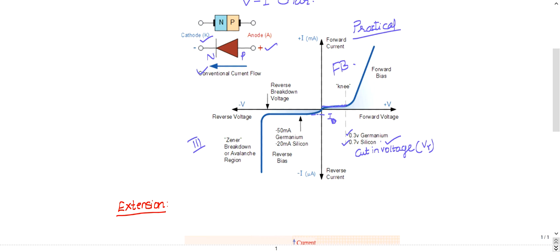If it is minus one volt, the current is I_naught. If you give minus five volts, still it is I_naught. If you give minus 10 volts, still it is I_naught, until you reach the breakdown voltage.